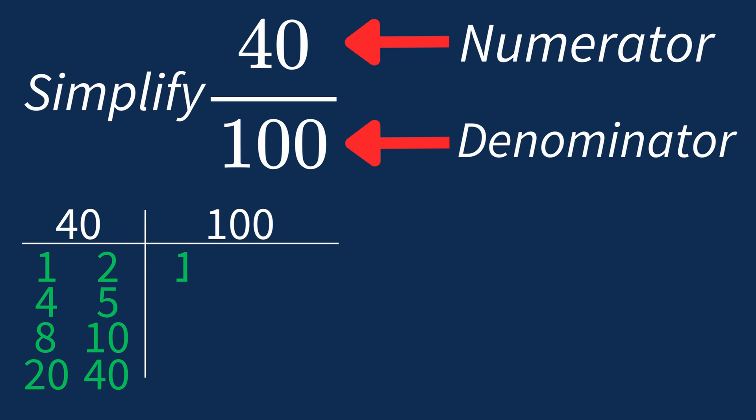For 100, the factors are 1, 2, 4, 5, 10, 20, 25, 50, and 100.